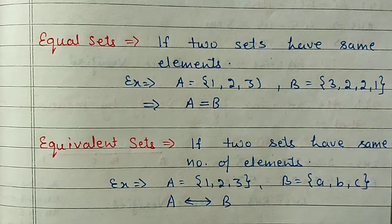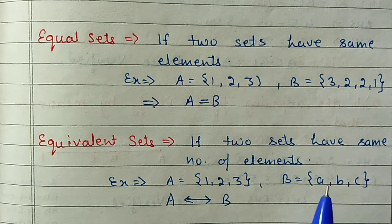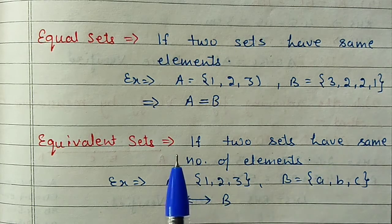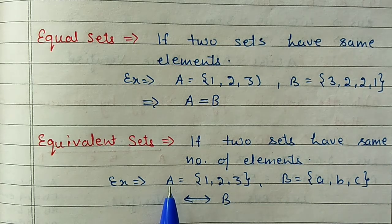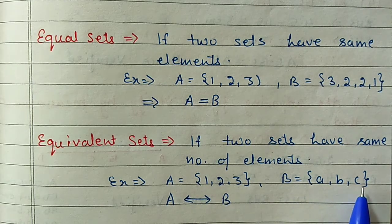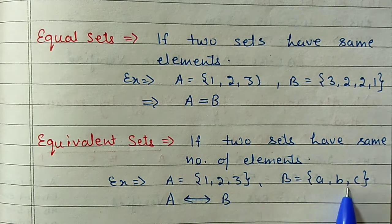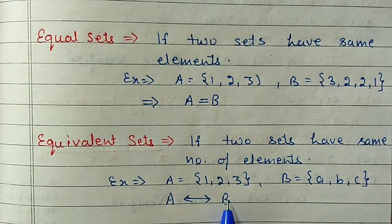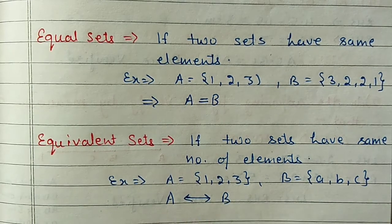Next is the equivalent set. In an equivalent set we compare only the number of elements - it is not compulsory that both sets have exactly the same elements. I have taken A = {1, 2, 3} (3 elements) and B = {A, B, C} (3 elements). So 3 elements here and 3 elements there - it means A and B are equivalent sets. For equivalent sets we use the double-sided arrow symbol.